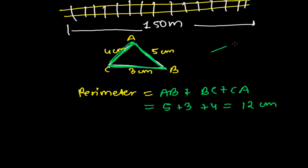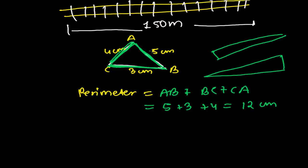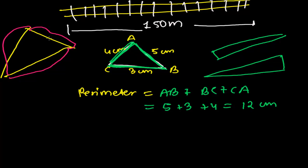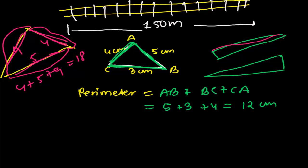Suppose another triangle has sides 4, 5, and 9. Then just sum them all: 4 plus 5 plus 9 equals 18 centimeters, which is the perimeter. Any kind of triangle it may be — just add all three sides and you will get the perimeter of the triangle.